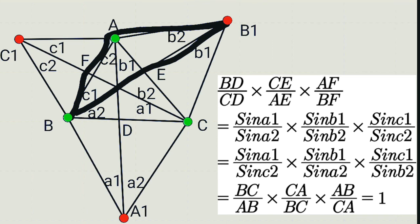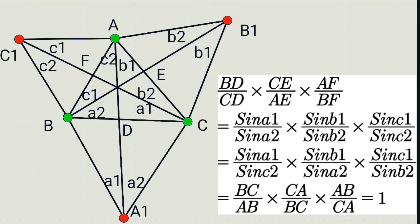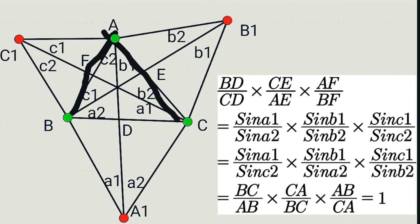For angle pair C1 and B2, from triangle ABB1, sine(C1) by sine(B2) equals AB divided by AB1, that is AB divided by CA. So the full product equals BC/AB × AC/BC × AB/CA, which equals 1. By the inverse of Ceva's theorem, these three lines meet at a point — and that point is the Fermat point.